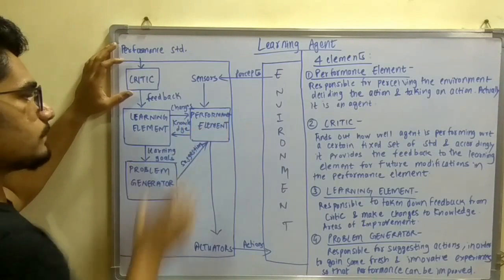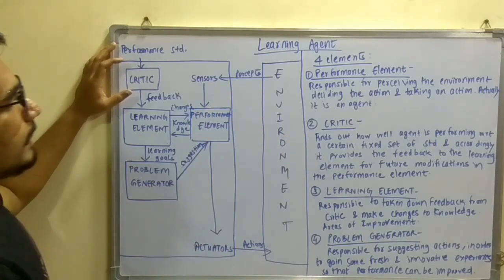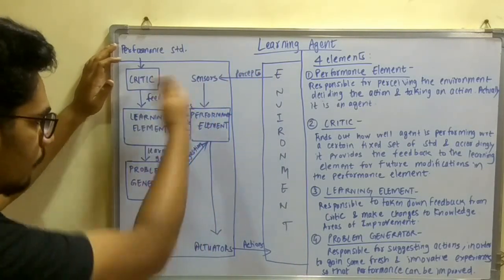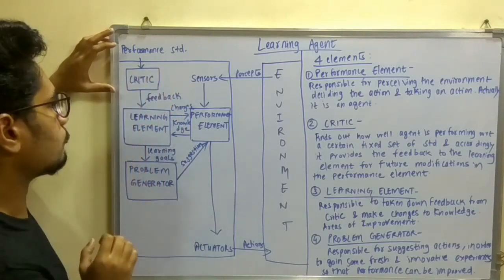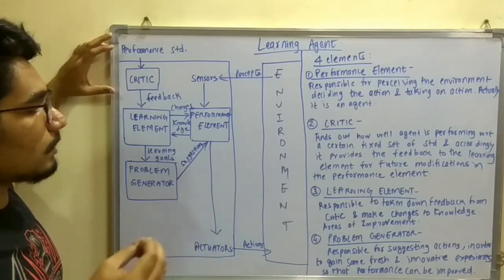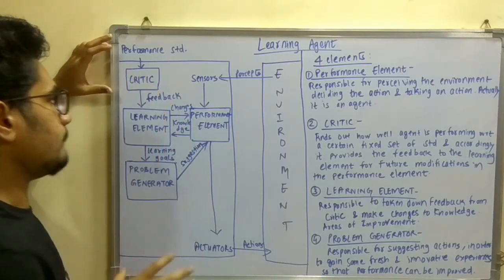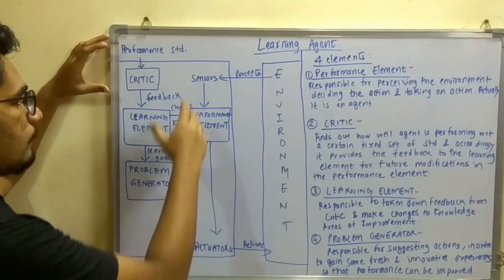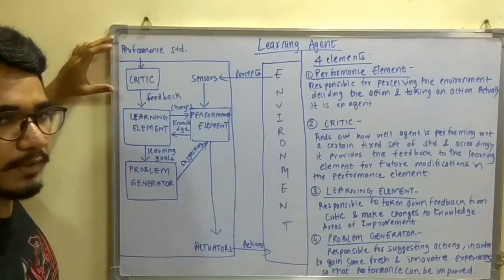Three blocks are used for learning purposes and one is used for performing actions. The performance element actually interacts with the environment — it senses percepts from the sensors and, when it gets updates or modifications, it sends signals to the actuators to perform actions on the environment. The critic decides how well the agent is performing in that particular environment and what kinds of actions it is producing, whether they are appropriate or not. Once evaluation is complete, it gives one feedback signal.